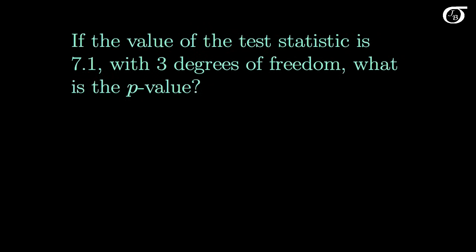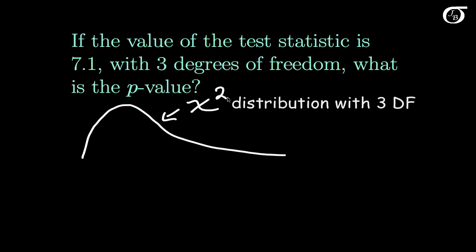Let's look at a quick example here. If the value of the test statistic is 7.1 with 3 degrees of freedom, what is the p-value? Well first of all we're going to draw out a chi-square distribution with 3 degrees of freedom. So this is a chi-square distribution with 3 degrees of freedom.